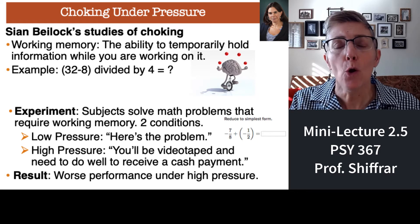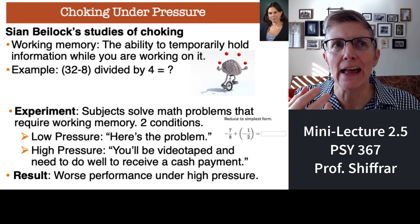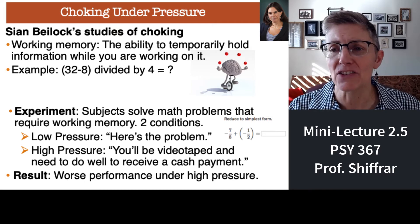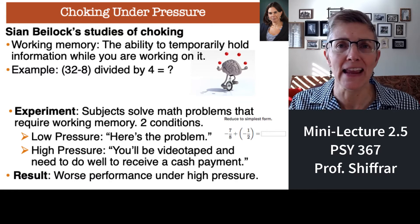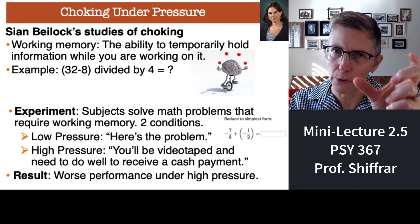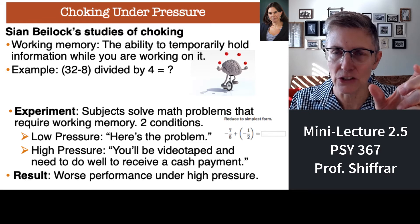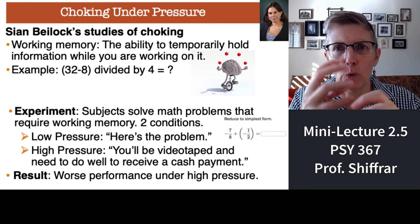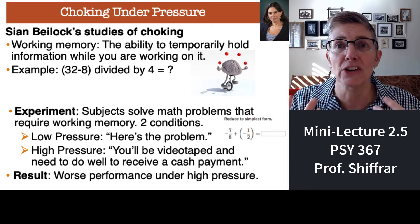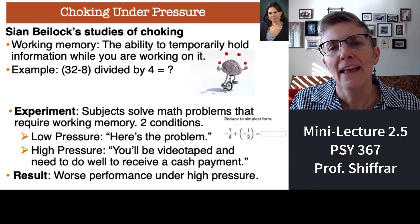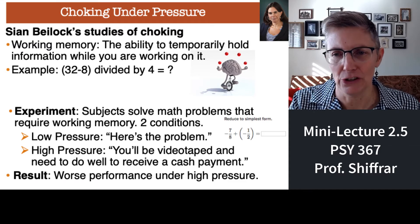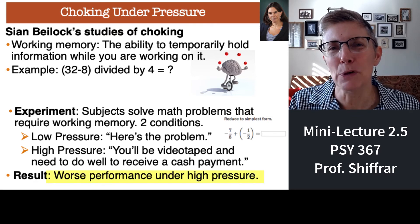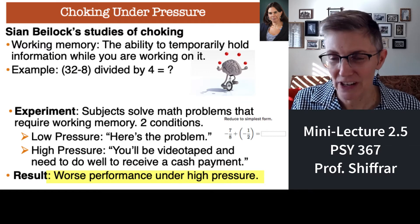Choking has to do with working memory. Working memory is how much information you can process or hold onto at the same time. For example, if I ask you what's 32 minus 8 divided by 4, you have to remember 32 minus 8, hold onto that answer, and then apply divided by 4. That's working memory — how much information you can work with simultaneously.